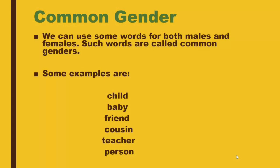One more type of gender is common gender. We can use some words for both males and females — such words are called common genders. For example: child, baby, friend, cousin, teacher, and person. A child may be a boy or girl; a baby can be a boy or girl; a friend, cousin, teacher, or person can be male or female.